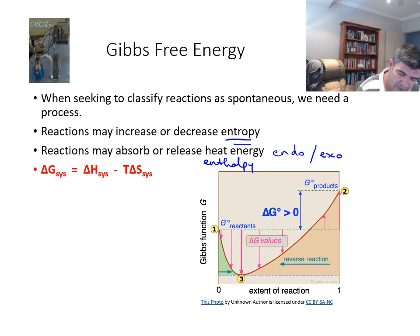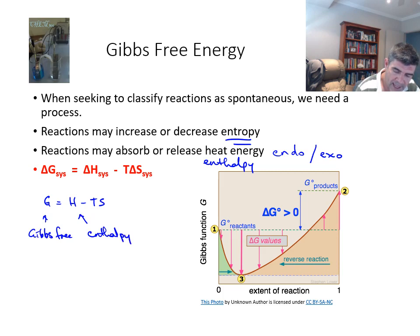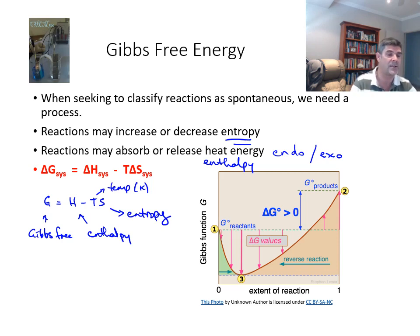So whilst we could write this formula as G = H − TS, that would assume we had some way of directly measuring the quantities of Gibbs free energy, H being enthalpy, T being temperature in Kelvin, and S being entropy. Because we can't do that directly, we need to measure change, and that is what is important.